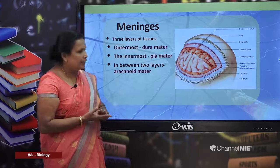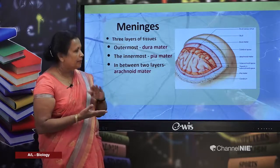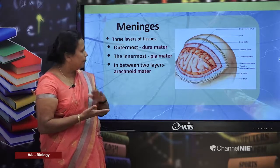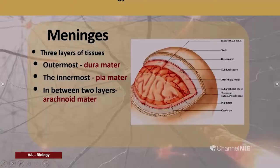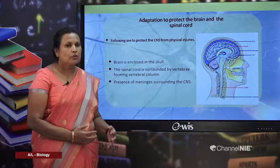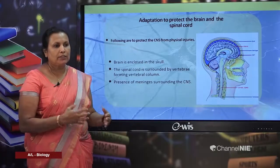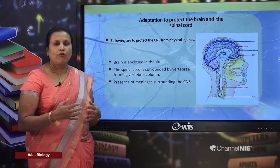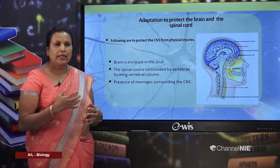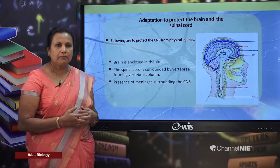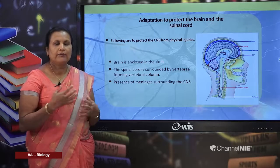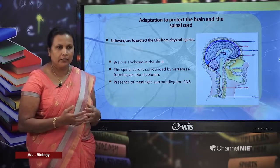The dura mater is present just beneath the skull, and the pia mater is present just outside the nervous tissue. So far we have studied the nervous organization of organisms in the animal kingdom and also nervous organization in humans.